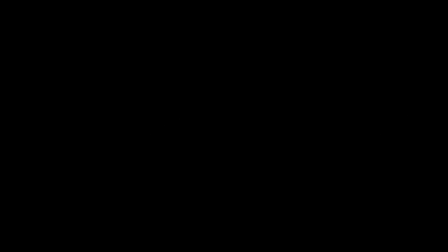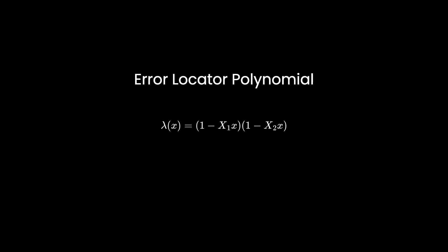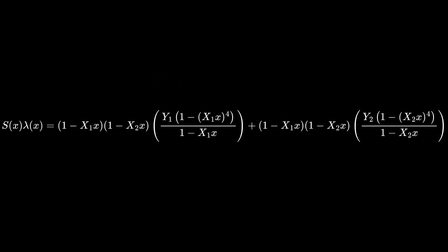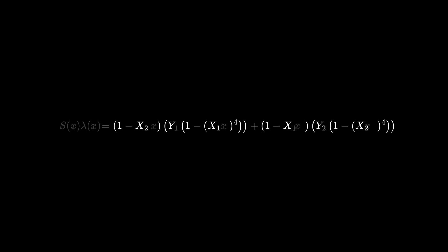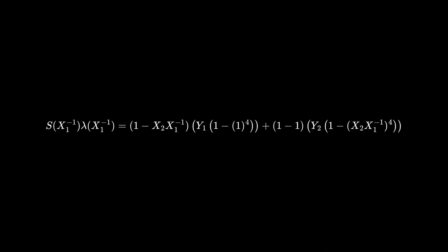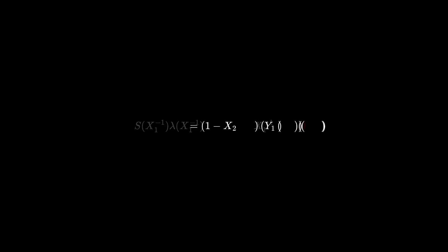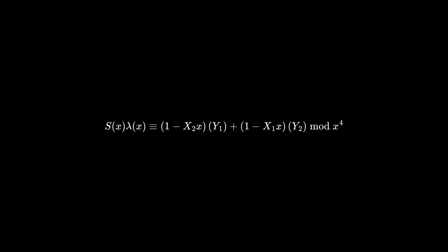Now I'm going to put that to the side for a moment and introduce another polynomial. This one is called the error locator polynomial, and it's called that because by definition its roots are the inverse of big x, which will help us find which terms are erroneous. Now let's multiply the error locator polynomial with the syndrome polynomial. These cancel out, and we're left with this. We can remove the remaining parts by taking this entire expression modulo x to the 4, and this is known as the error magnitude polynomial.